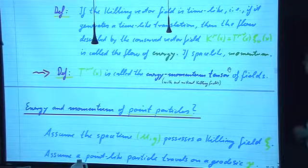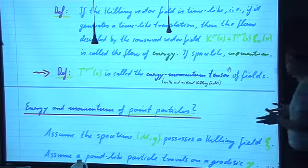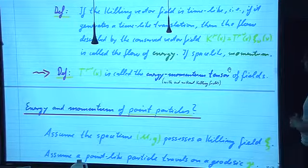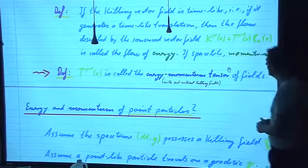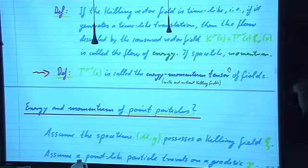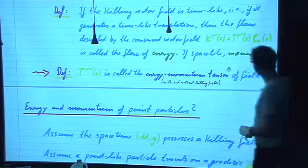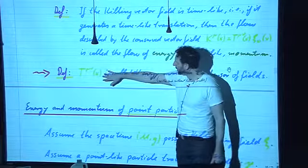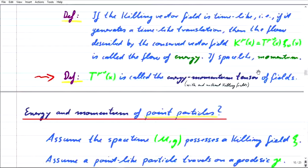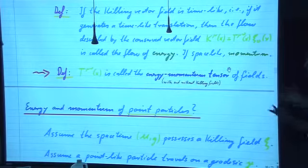Now a definition: if the Killing vector field ψ is time-like, then it generates a time-like translation. We have therefore a translation invariance in a time coordinate, and we call the conserved flow an energy. If the vector field ψ is space-like, then we say it is a momentum that is conserved. And in Minkowski space, that reduces to the usual notions of energy and momentum. That's why it makes sense to call T^μν the energy-momentum tensor of fields — we see that in the case of translation symmetries, its contraction with the direction of the symmetry (the Killing vectors) gives us a conserved quantity. When there is no Killing vector field, we still get flows, but they're just not conserved.